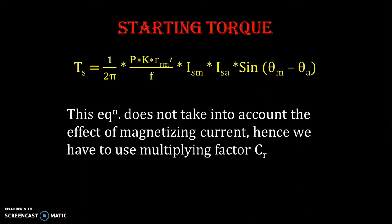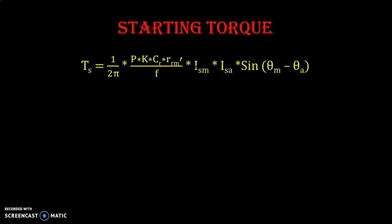Hence we introduce a multiplication factor cr, which can be taken as equal to k, the turns ratio of the auxiliary winding to main winding. With this correction factor, the updated equation for starting torque becomes: 1 over 2pi, multiplied by p, multiplied by k, multiplied by cr, multiplied by Rrm dash, divided by f, multiplied by Ism multiplied by Isa, multiplied by sine of theta_m minus theta_a.